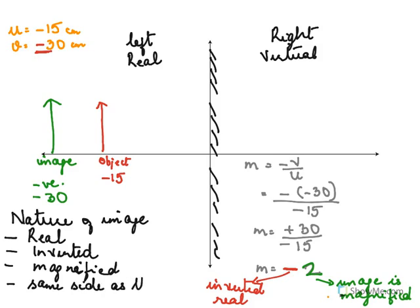The nature of the image: it is real, inverted, and magnified. It is on the same side as the object — both negative — meaning it is in front of the mirror at a distance of 30 centimeters.